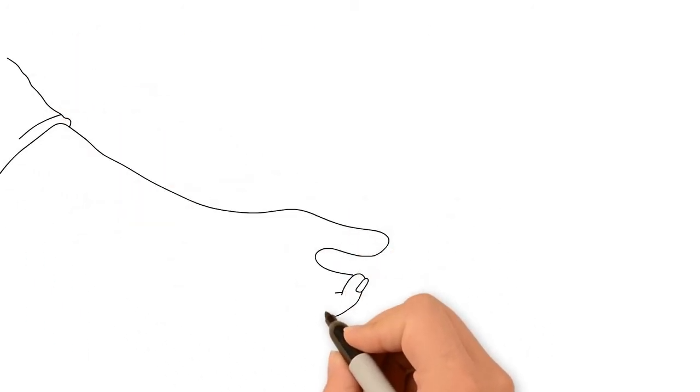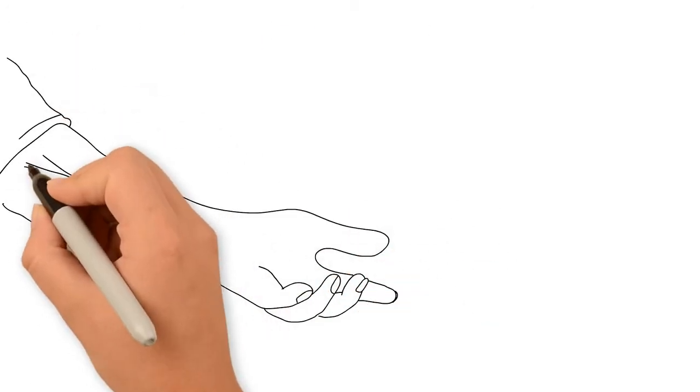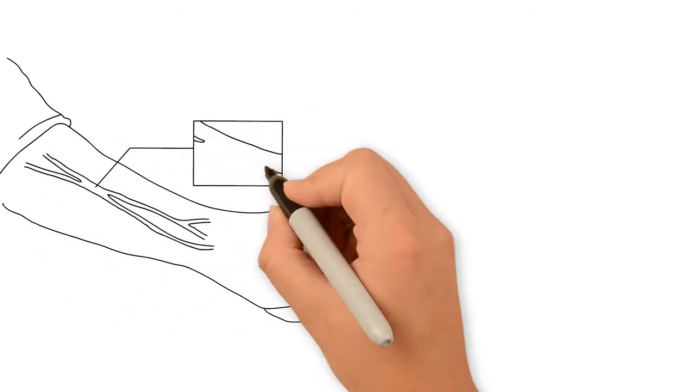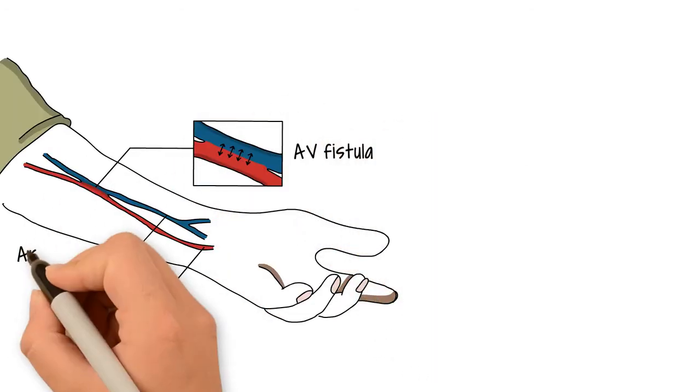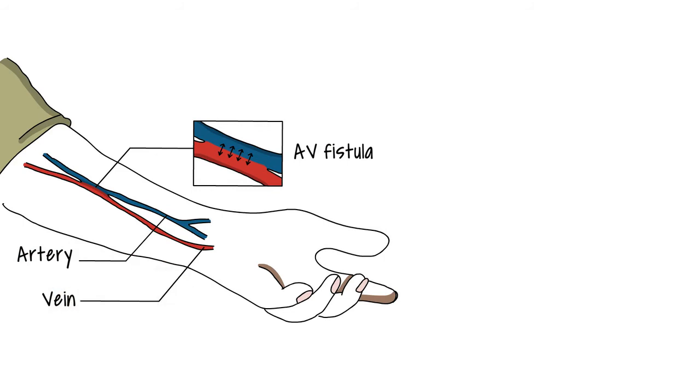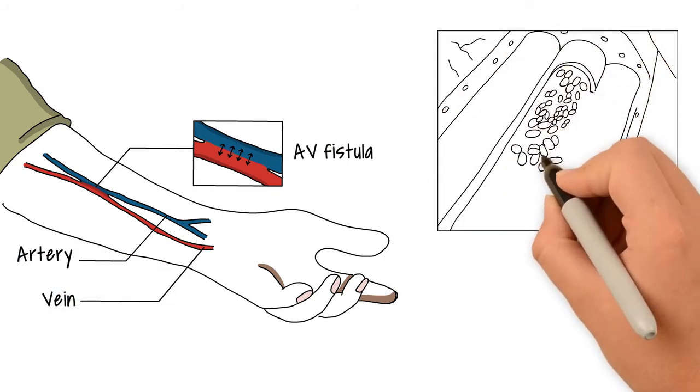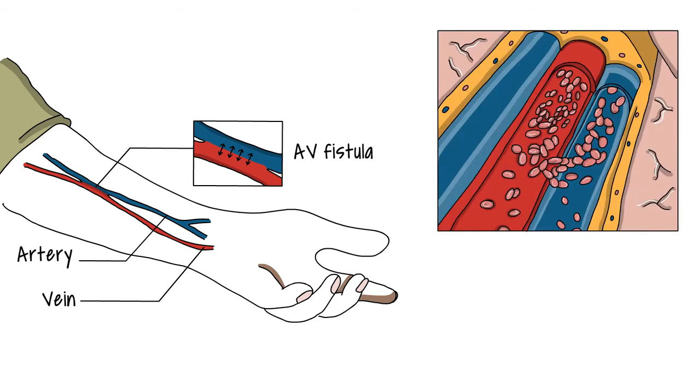An IR procedure called endo-AVF connects an artery to a vein, providing stronger, wider veins for kidney dialysis. It's done using specialized catheters, including some with magnets, so there's no need for an incision in the arm.